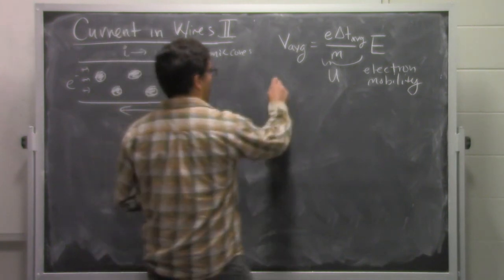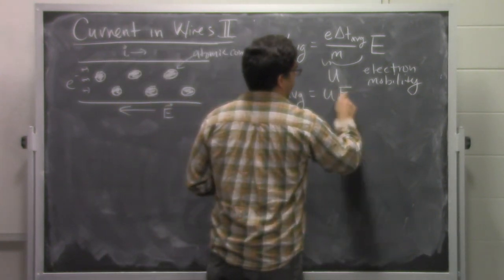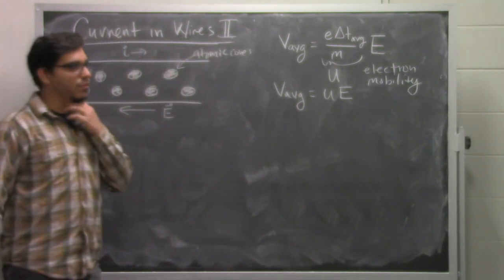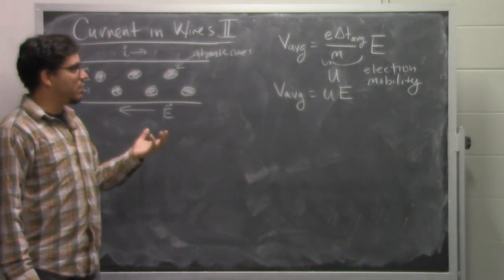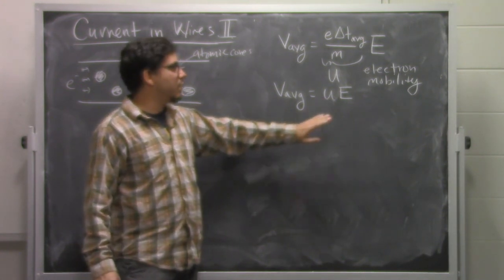So this kind of makes sense in thinking about how we might relate the average velocity to the electric field. Now what we notice then is that there's some coefficient out front associated with the materials and the charge carriers that we have.